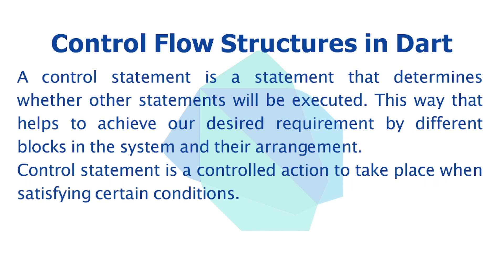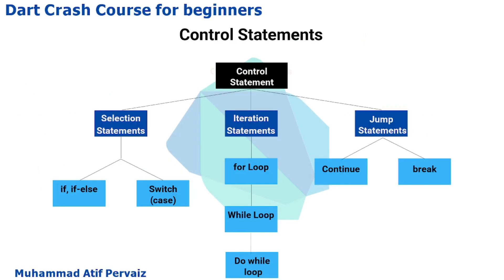We have a total of three types of control statements: selection statements, iteration statements, and jump statements. In selection statements we have two subtypes: if and if-else, and then switch.